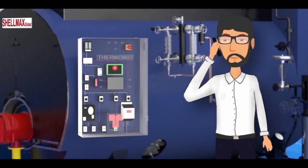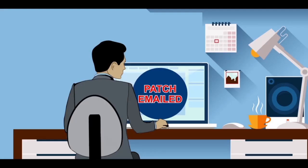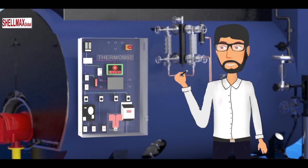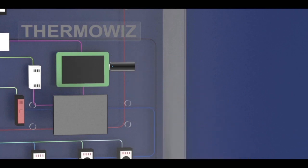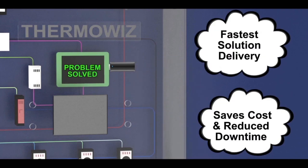Based on requirement at site, software patches can be prepared in back office and emailed to site office. These patches can be simply uploaded into the ThermoWiz with a USB drive. It saves on downtime of equipment due to service engineer unavailability.